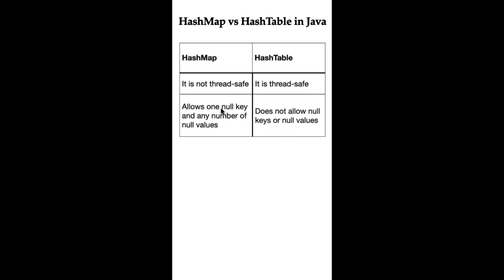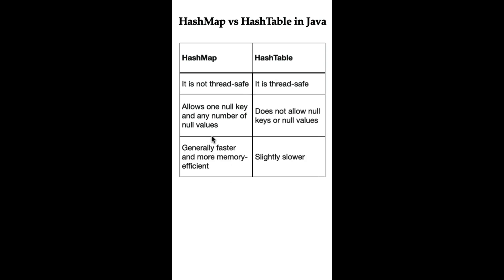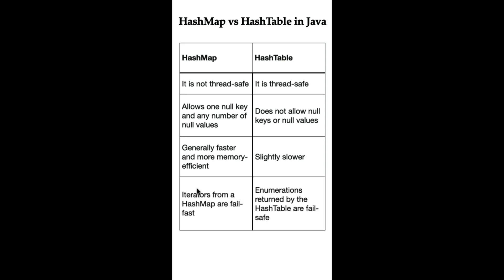HashMap allows one null key and any number of null values, whereas Hashtable does not allow null keys or null values at all. HashMap is generally faster because it does not have the overhead of synchronization, making it more efficient when thread safety is not needed. Hashtable can be slightly slower because it ensures thread safety, which adds extra processing.